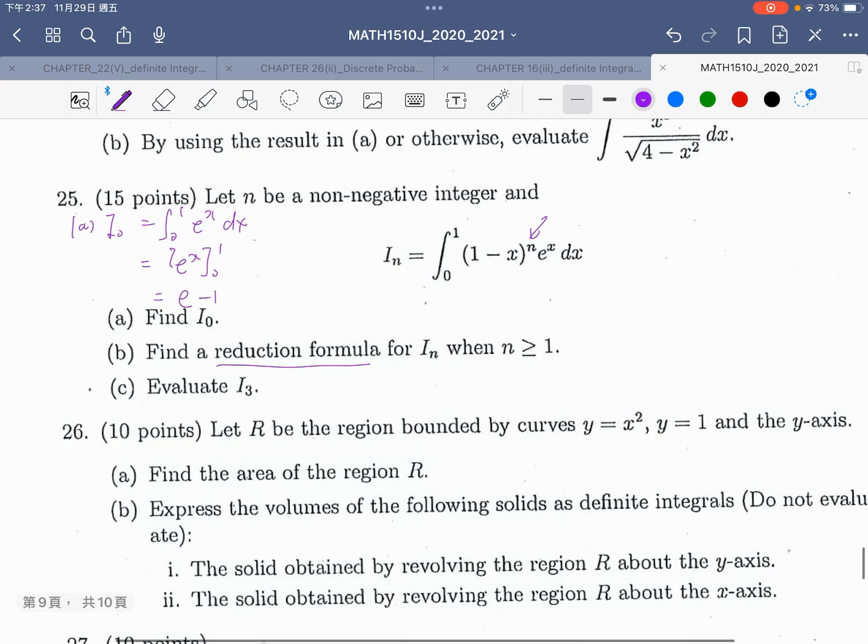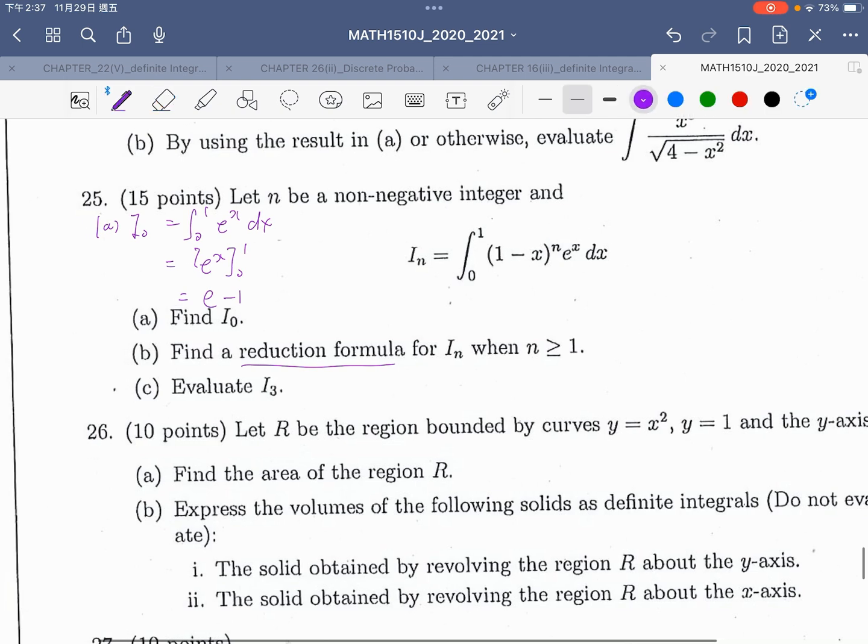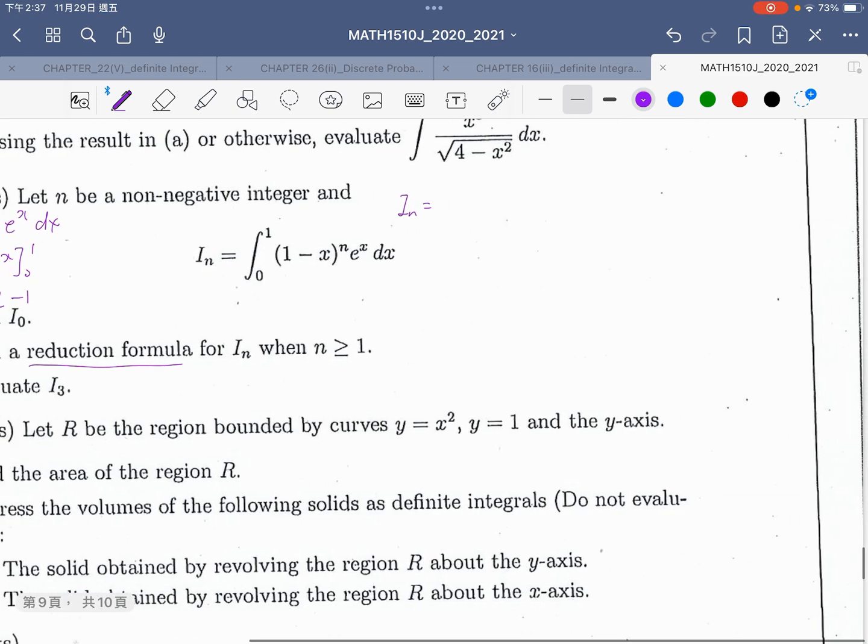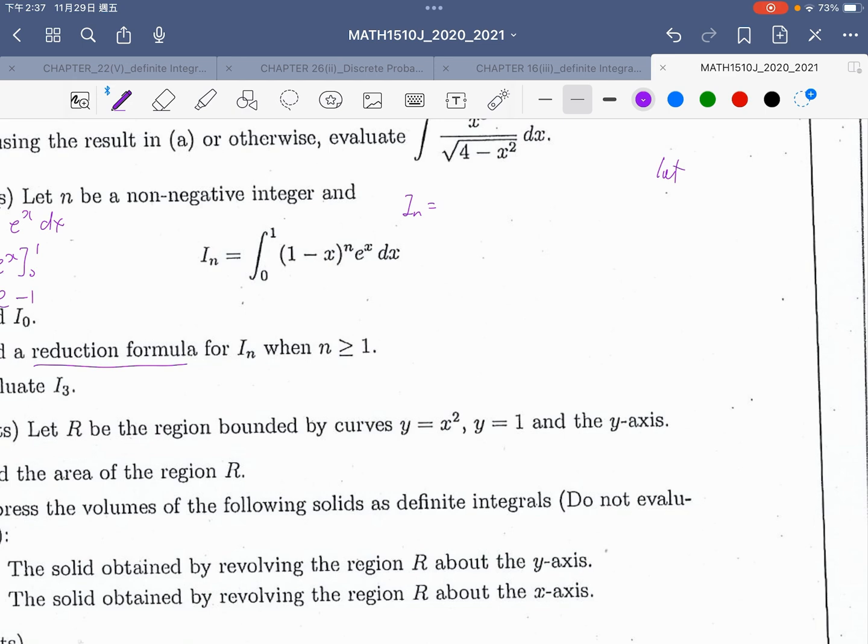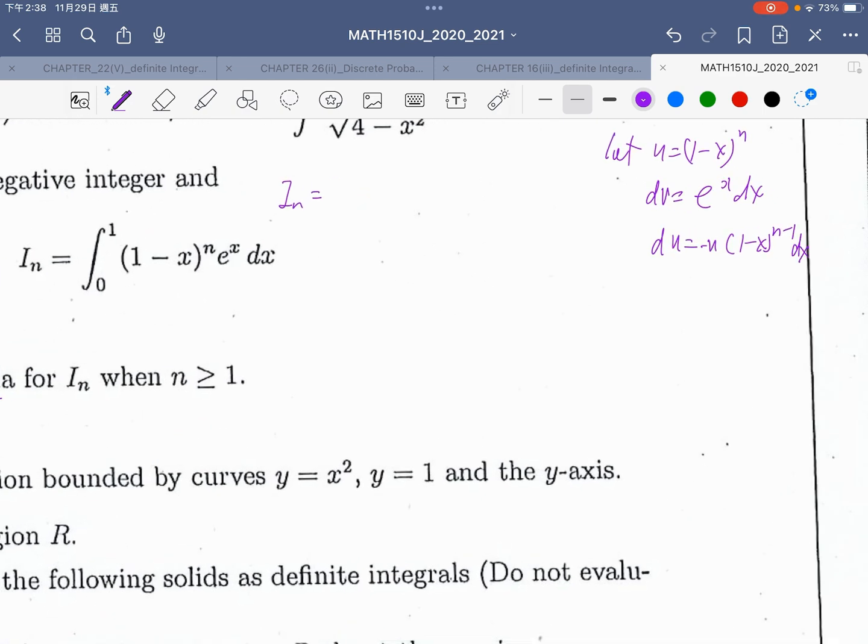For the reduction formula, we have to use integration by parts. Let u equal (1 - x)^n, dv equal e^x dx, du equal n(1 - x)^(n-1) and negative sign here dx, v equal e^x.